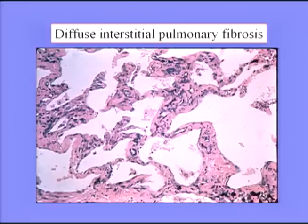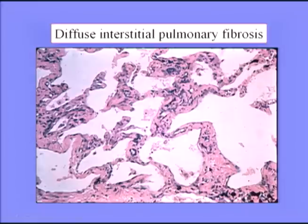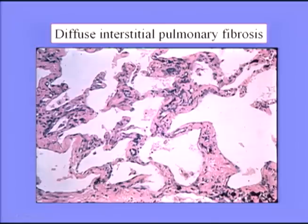Here's a light micrograph showing tremendous thickening of the alveolar walls — you can perhaps hardly recognize them as alveoli, but that's what they are. Great amounts of collagen and disorganization of the architecture caused by this scarring process. Another feature is that the capillaries are few and far between — the laying down of collagen has obliterated many of the capillaries, so a reduction in capillary blood volume is a feature of diffuse interstitial pulmonary fibrosis.